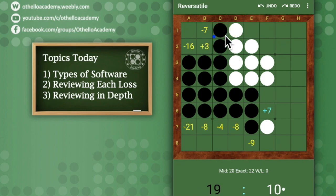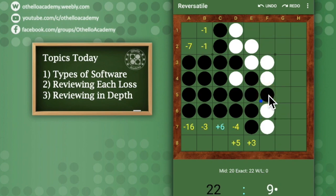So yeah, basically, that's the basics of reviewing games with software. As long as you replay the sequences, you're able to kind of find out where you went wrong and where you probably could have done better and you could have played differently.